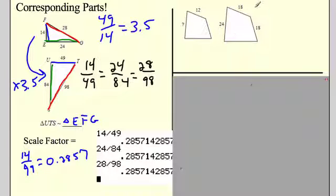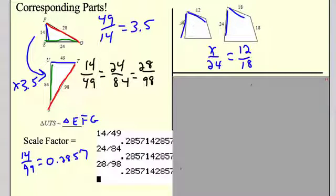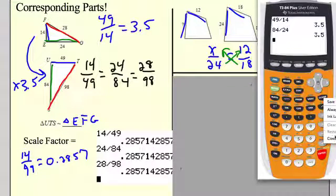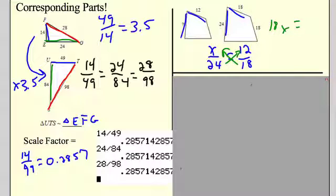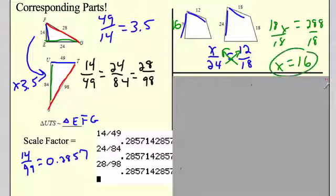If you're good at proportions, you'll love this section. Set up corresponding parts: x is to 24 as 12 is to 18 — small quadrilateral to big quadrilateral. Cross multiply: 18x equals 24 times 12, which is 288. Divide by 18: x equals 16. Let's double-check — 16 to 24 and 12 to 18. Seems very reasonable. Good answer!